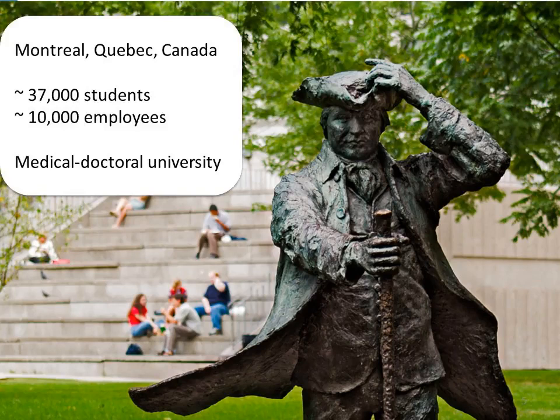McGill University is located in Montreal in Quebec, Canada. It's an English language university in a French-speaking province. We have a very diverse student population from all over the world and we are a government-funded institution. We have over 37,000 full-time students, about 8,000 to almost 9,000 of those are graduate students. We have over 3,000 instructional faculty and about half of those are tenure stream. In a given year we have about less than 800 doctoral degrees awarded.